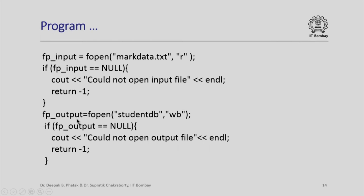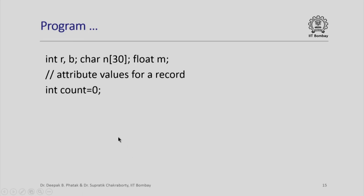We associate fpoutput by opening another file called studentdb with parameter wb — w means for writing (output file) and b means binary file. By default a file is text, but writing b specifies binary. If the file cannot be opened, we get a null pointer, print an error message and return -1. We also define four temporary variables: r, b, char n[30] and float m, to hold values read from the input file.